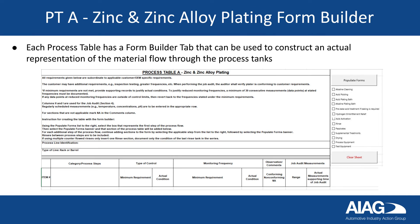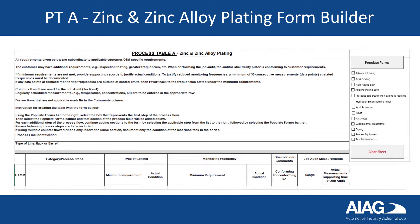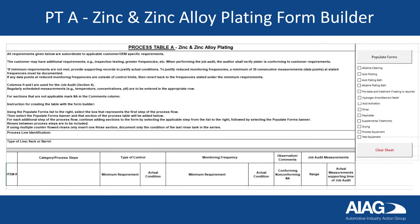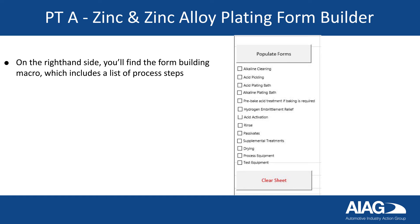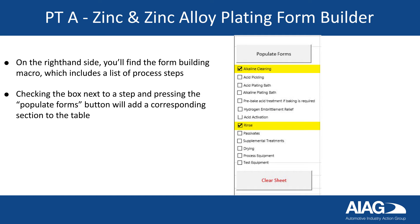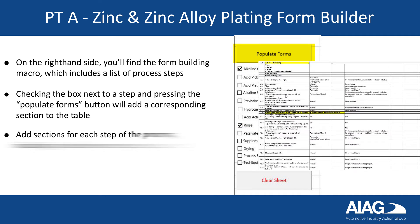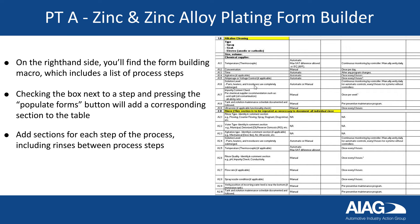Alternatively, each process table has a form builder tab that can be used to construct an actual representation of the material flow. Let's try with process table A. You'll see that the header is the same as before, but the rows are unpopulated. On the right-hand side, you'll find the form building macro, which includes a list of process steps. Checking the box next to a step and pressing the populate forms button will add a corresponding section to the table. Add sections for each step of the process, including rinses between process steps.